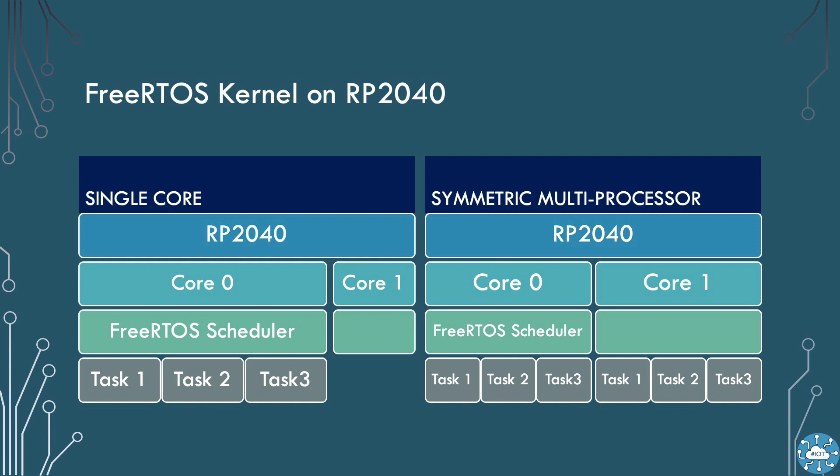The scheduler will then run on just one of the cores, while both cores get to run tasks for us. We have the ability to choose which core a task will run on, or to allow it to move between cores based on scheduler decisions.